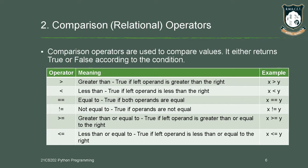The comparison operator is used to compare values. The result of the comparison operator is a Boolean value. Based upon the condition or operation performed, the result will be either true or false. The operators in this category are: greater than, less than, equal to, not equal to, greater than or equal to, and less than or equal to.